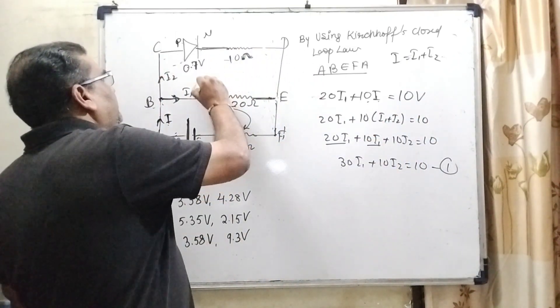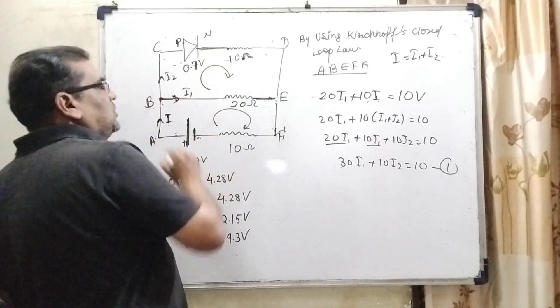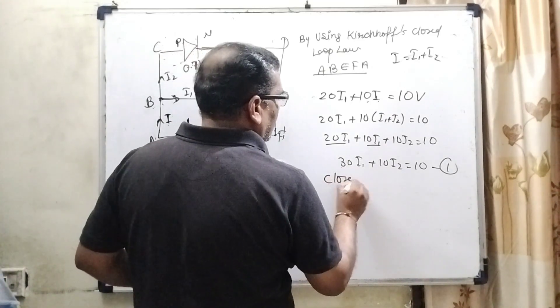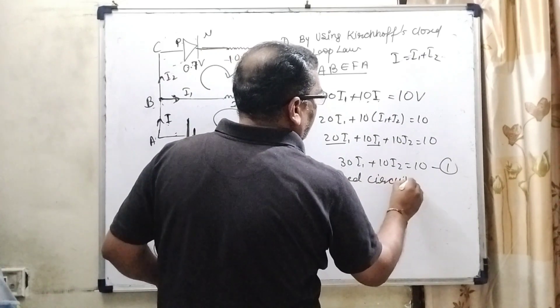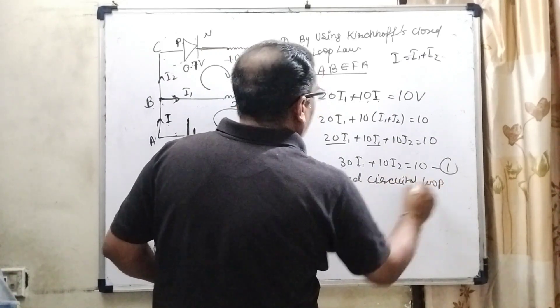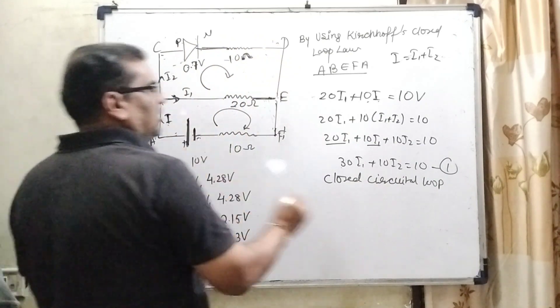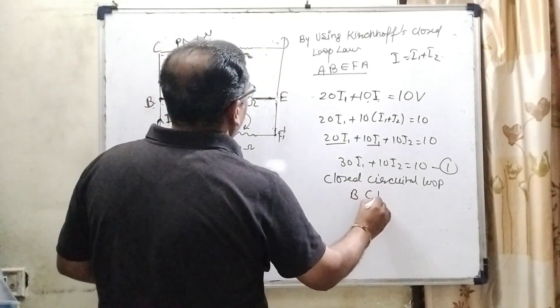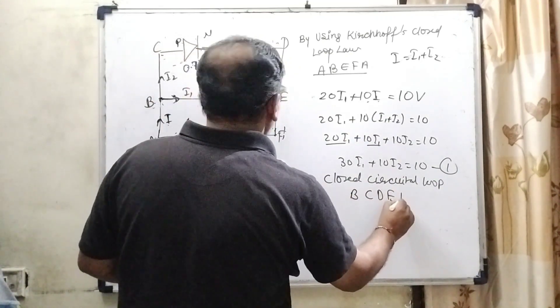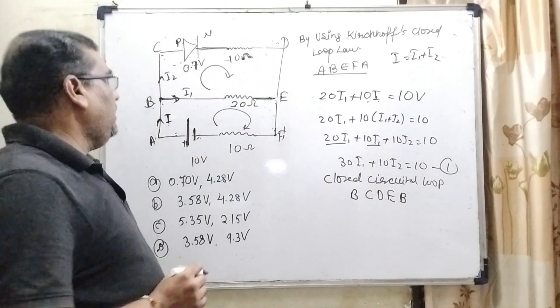Now here we are moving through closed circuit loop. What is the path? That is B, C, D, E, B. B, C, D, E and again B.